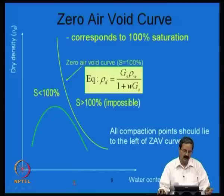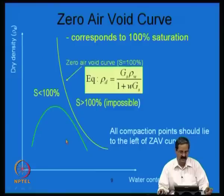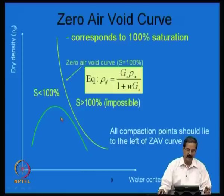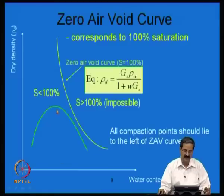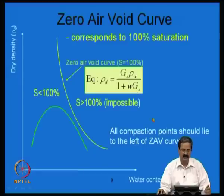It is always a good idea to plot the compaction curve in relation to the zero air voids line, because this gives the range of water contents. For example, you have the 100 percent saturation line, 90 percent, 80 percent, and 70 percent saturation lines. This allows you to understand the relative magnitudes of water content and density changes due to degree of saturation, which is important from a field point of view for understanding density and settlement changes when material gets saturated.